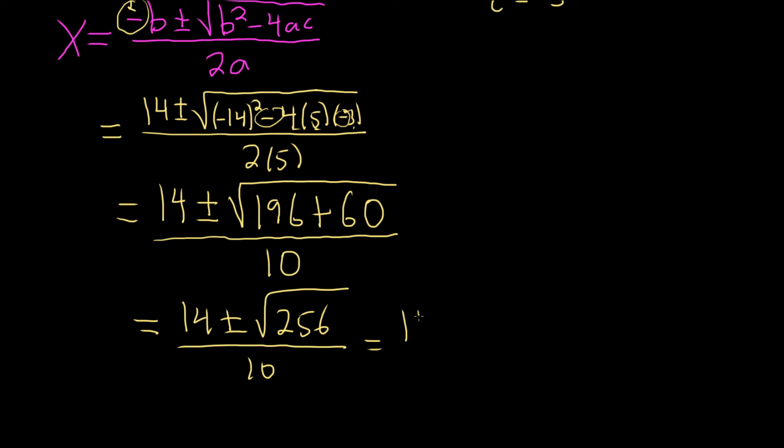So this is 14 plus or minus 16 over 10. Okay, so we have two possible answers. Let's go ahead and break it up. So there's two cases, the plus case and the minus case. So x equals 14 plus 16 over 10. So that will be 30 over 10. So that's 3. So x is 3, that's one answer.